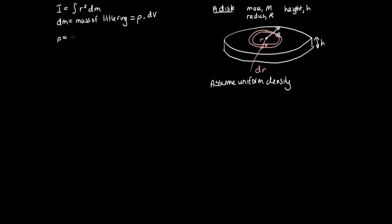The density of the disc equals the mass of the disc divided by the volume of the disc. The mass is M. The volume is π R² (the surface area of a circle) times the height H of the disc. So the density is M over π R² H.